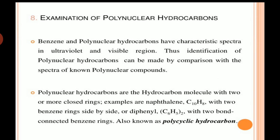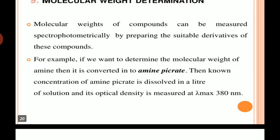Examination of polynuclear hydrocarbons. Benzene and polynuclear hydrocarbons have characteristic spectra in ultraviolet and visible regions. Thus identification of polynuclear hydrocarbons can be made by comparison with the spectra of known polynuclear compounds. Polynuclear hydrocarbons are hydrocarbon molecules with two or more closed rings, for example naphthalene and diphenyl, with two fused concentrated benzene rings, also known as polycyclic hydrocarbons.